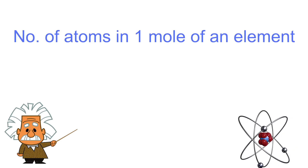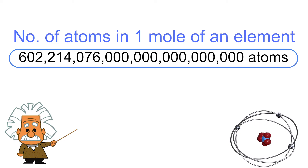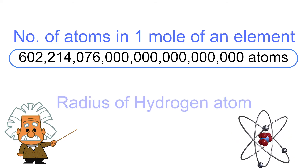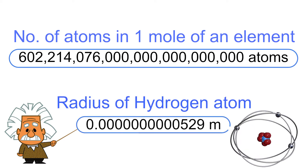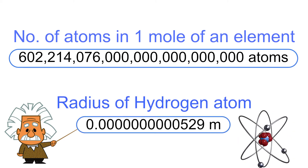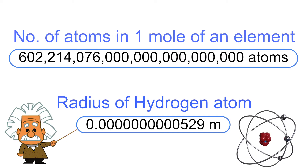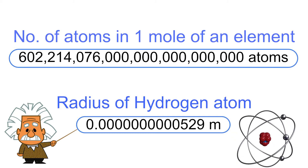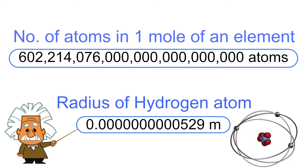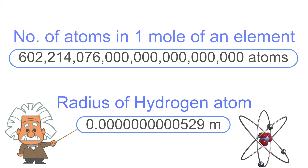Consider the number of atoms in one mole of an element, or the radius of a hydrogen atom. For extremely large and extremely small quantities, there is a more convenient way to express such values. This is called scientific notation.